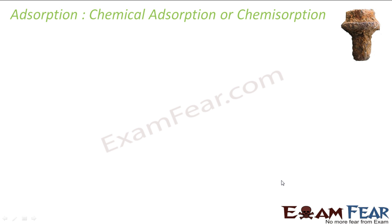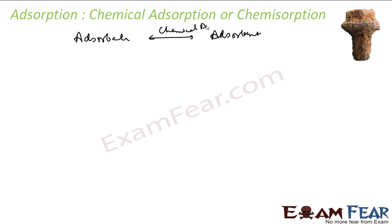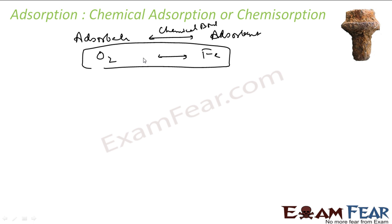In chemical adsorption or chemisorption, the adsorbate is held to the adsorbent by a chemical bond. For example, iron and oxygen react to form rust — the well-known rusting of iron equation. These chemical bonds can be ionic or covalent.